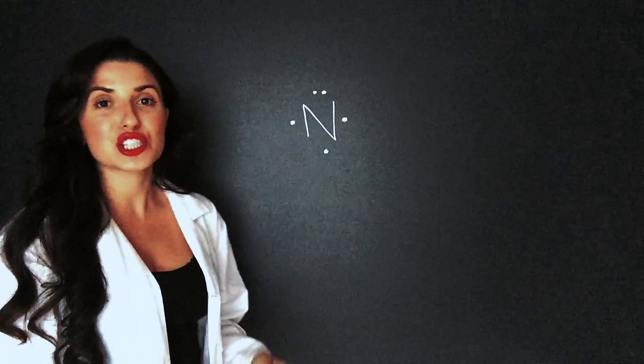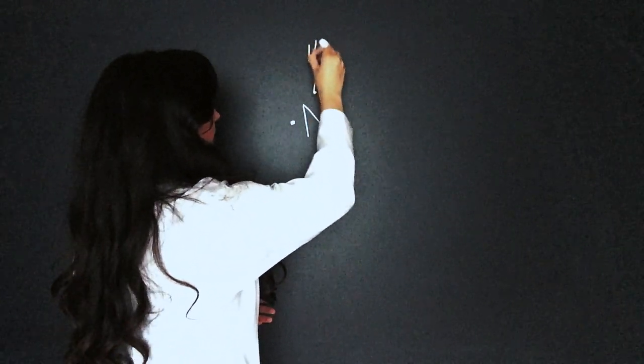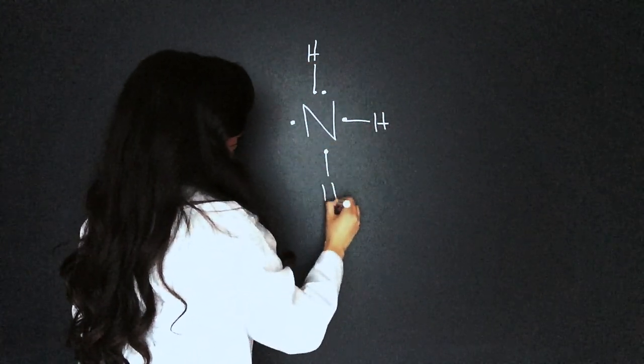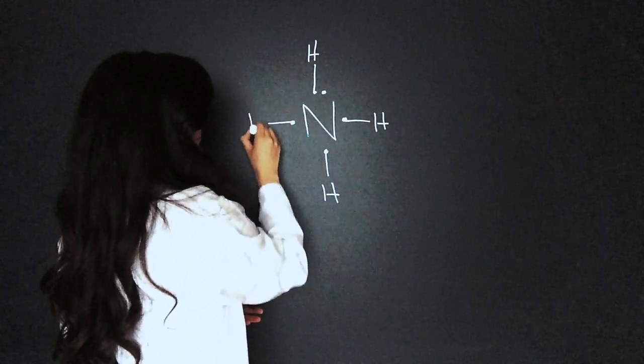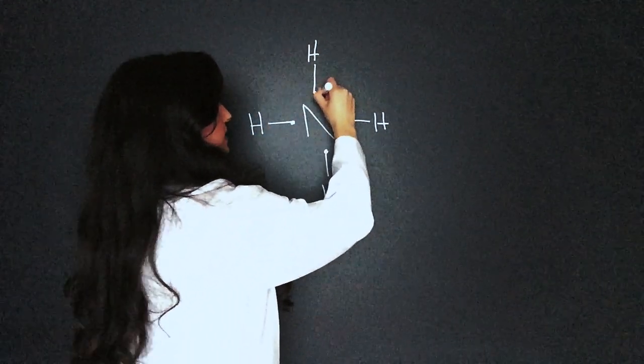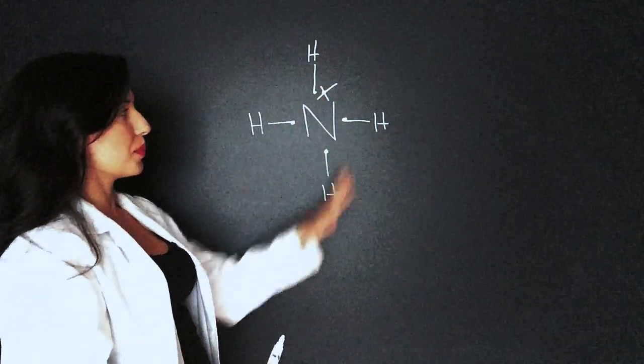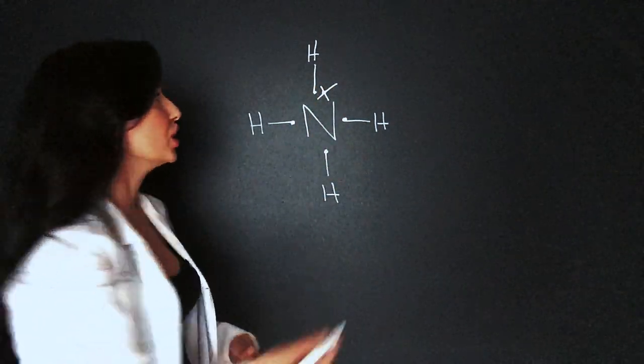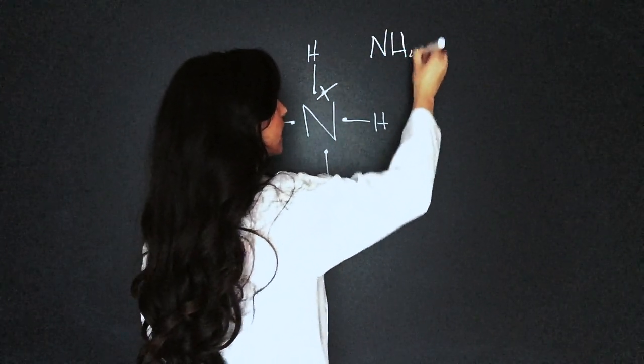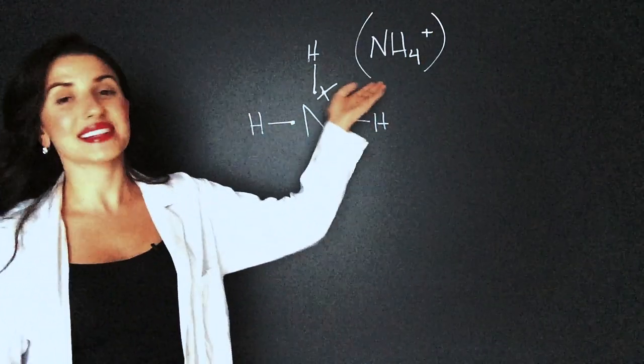When it binds to four hydrogens, one, two, three, four. This electron will just disappear. We now have NH4, but it's missing one electron. So we write NH4 plus, and that's ammonium.